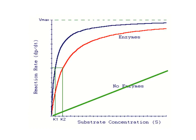First, the basic function of an enzyme is to increase the rate of a reaction. Most cellular reactions occur about a million times faster than they would in the absence of an enzyme.